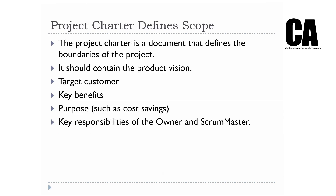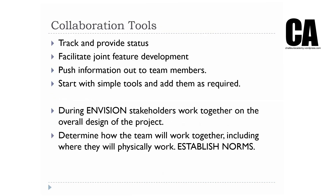The project charter defines the scope of the project and should contain the vision or grand idea surrounding it. You need to know who your target users are, what the key benefits are, and what the purpose of this project is. The scope is the key responsibility of the owner and the scrum master — a new term. In the old days we called the scrum master the production manager. The scrum master is the person who oversees and removes roadblocks from the project. So we have two key members: the owner with the vision, and the scrum master.